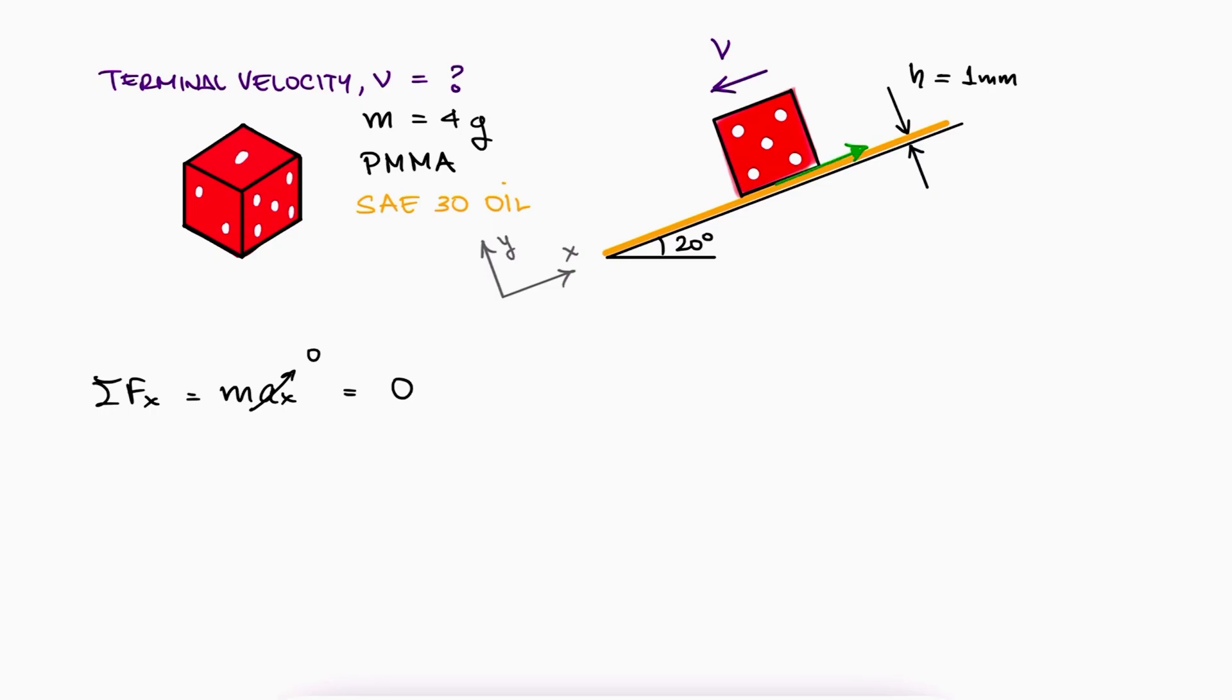And since one of the forces depends on the velocity of the object, we can solve for that velocity from this sum of forces. That force is specifically the force that results from multiplying shear stress tau between the film and the surface of the object by the contact surface of said object.